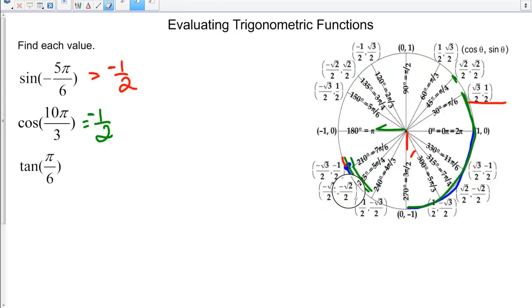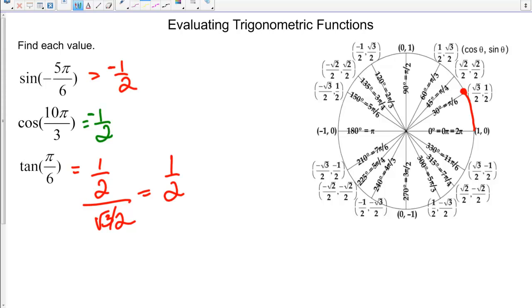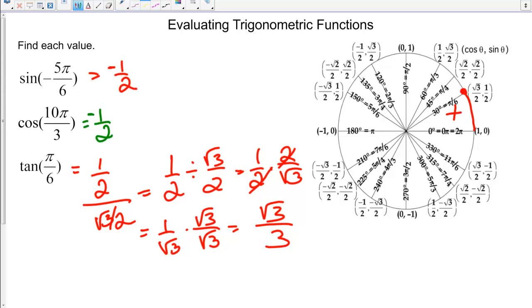Finally, tangent of π over 6. We're going to go up π over 6. Tangent is 1/2 divided by √3 over 2, so we get 1/2 divided by √3 over 2, which gives us 1/2 times 2 over √3. The 2s cancel, so 1 over √3. Multiply top and bottom by √3 to get √3 over 3, and our sign is going to be positive.